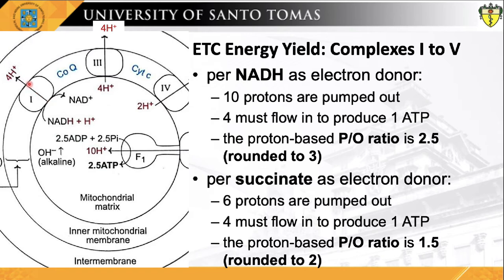Looking at the electron transport chain, a total of 10 protons will be translocated out to the intermembrane space when NADH is oxidized as electron donor at Complex I. With four protons translocated for each ATP synthesized, an estimated 2.5 ATPs are formed for each NADH oxidized, resulting in a P/O ratio of 2.5. With succinate as electron donor via Complex II, a total of six protons are translocated through Complexes III and IV, resulting in 1.5 ATPs for each FADH2-containing flavoprotein oxidized, giving a P/O ratio of 1.5.